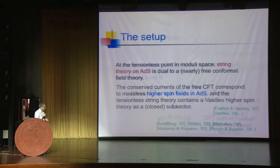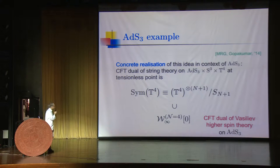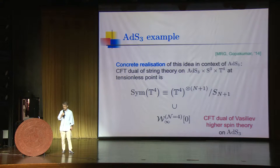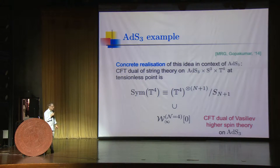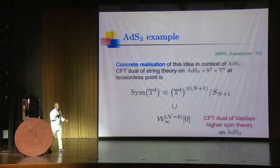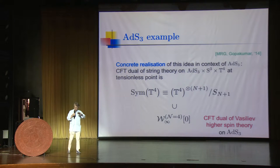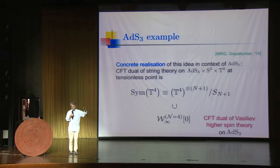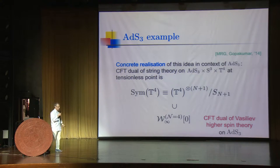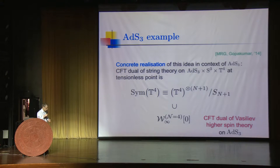This is an old idea. More recently, there is one concrete realization in the context of AdS3: the CFT dual of string theory in AdS3 cross S3 cross T4 is the symmetric orbifold of T4. The symmetric orbifold of T4 contains in particular a large W-infinity algebra — this W-infinity of N equals to 4 algebra — which is the W-algebra appearing in a family of dualities between Vasiliev higher spin theories and conformal field theories. That's the CFT dual of the embedding of a higher spin subsector into string theory at the special point dual to the symmetric orbifold of T4.